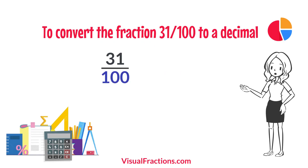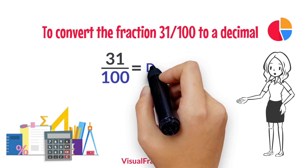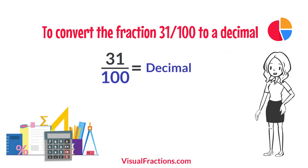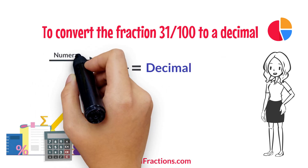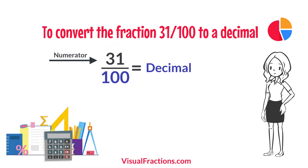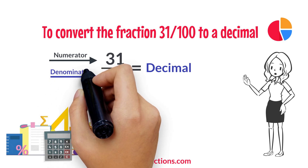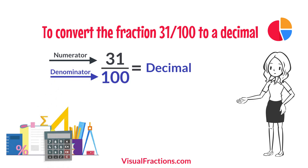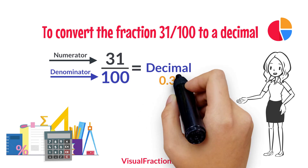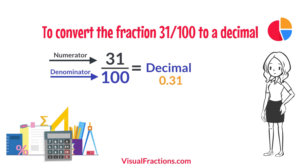To convert the fraction 31 one-hundredths to a decimal, all we need to do is divide the numerator — the top number — by the denominator — the bottom number. So we simply divide 31 by 100. The answer we get is 0.31.